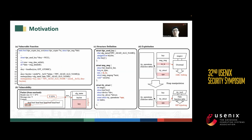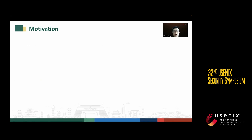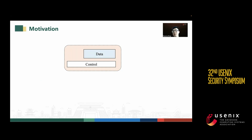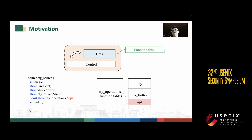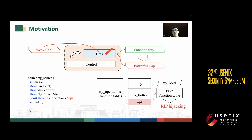I will show how those objects work with an example. There is an overflow vulnerability, and we can construct a special package with a large number in the length field to trigger this vulnerability. Then we can use the object msg and ttv-extract to achieve address leaking and IP hijacking. We found that sensitive objects always help the program with some functionality, such as the kernel using ops in ttv-extract to finish function pointer invoking. We can use a weak capability to corrupt those data and transfer that functionality to our powerful capabilities — for example, corrupting ops to hijack the RIP.